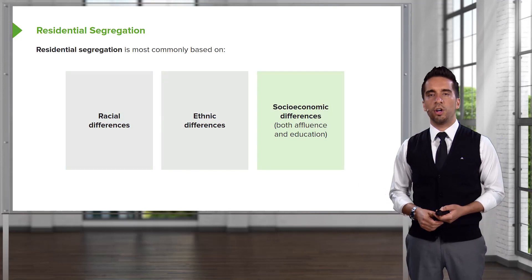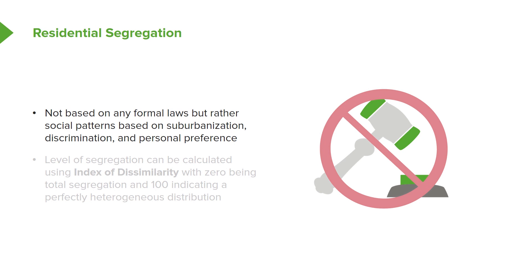We know that when residential segregation occurs, it's not because laws have been enforced. Typically it's more based on social patterns such as suburbanization, discrimination, and personal preference.